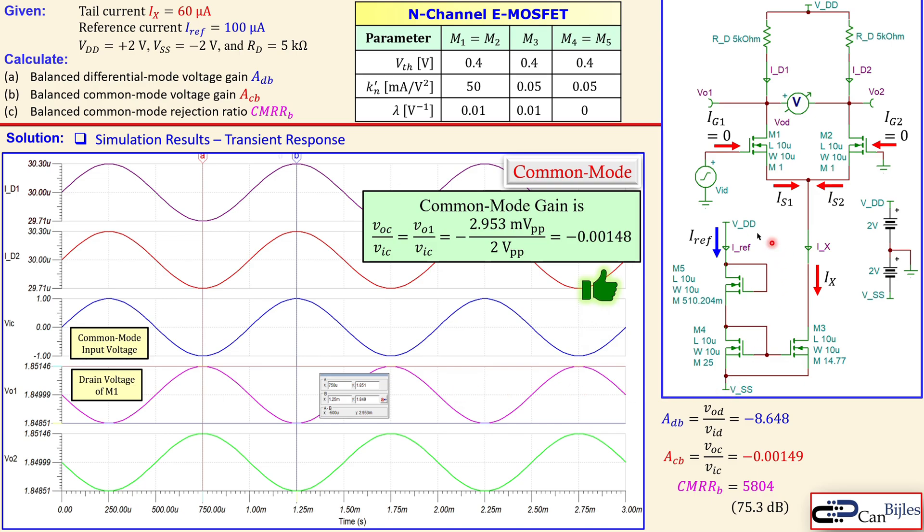This is our example considering the differential mode gain, common mode gain, and common mode rejection ratio for this MOSFET differential amplifier having the current source using only transistors. If you have any questions or comments about this example, please let me know. I will try to answer them as soon as possible. See you next time in another video.